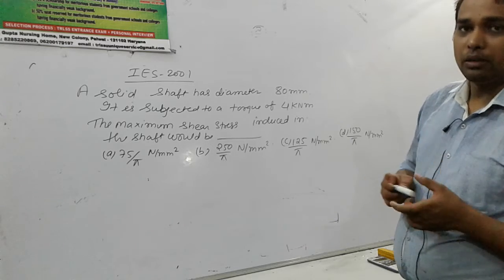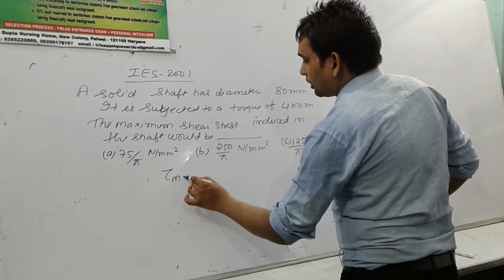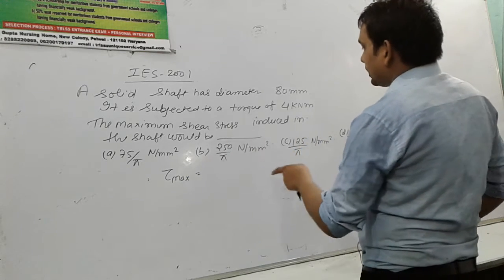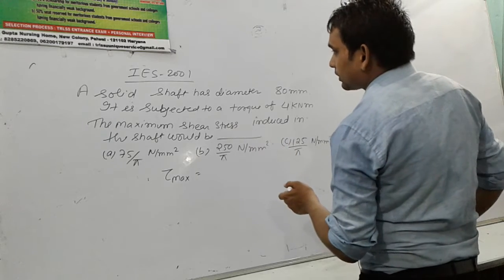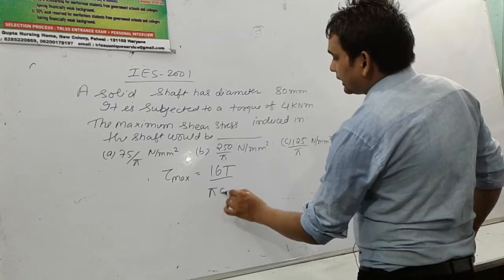We should know the formulas. Maximum shear stress, the formula for maximum shear stress induced in the shaft is equal to 16T upon πD³.